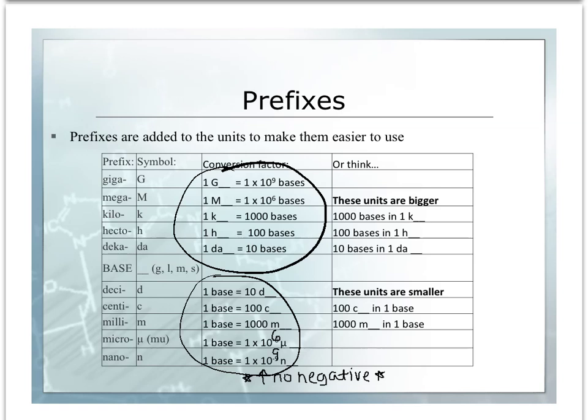So for example, if we were looking at meters, we would have one gigameter would be one times ten to the ninth meters, or one kilometer would be a thousand meters. Looking below, in the smaller units, if we had one meter, we would have 100 centimeters, or if we had one meter, we would have one times ten to the negative ninth nanometers. So it's important that you understand these conversion factors, because this is what you will be using to put in your dimensional analysis when solving for metric conversions.